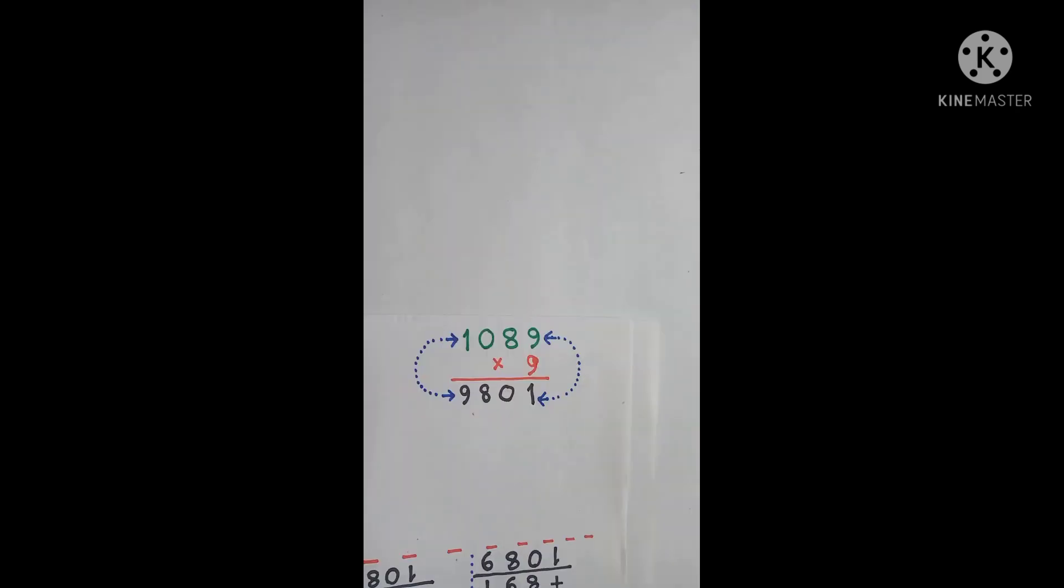Here is another interesting property about 1089. Multiply this number by 9. After multiplying it by 9, we will get 9801.